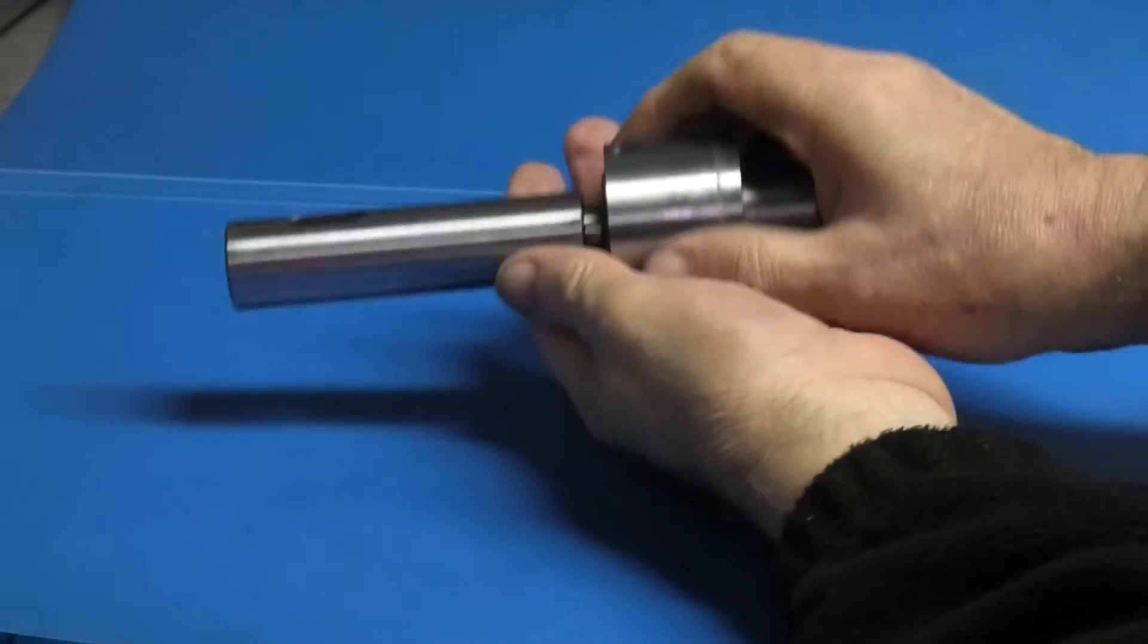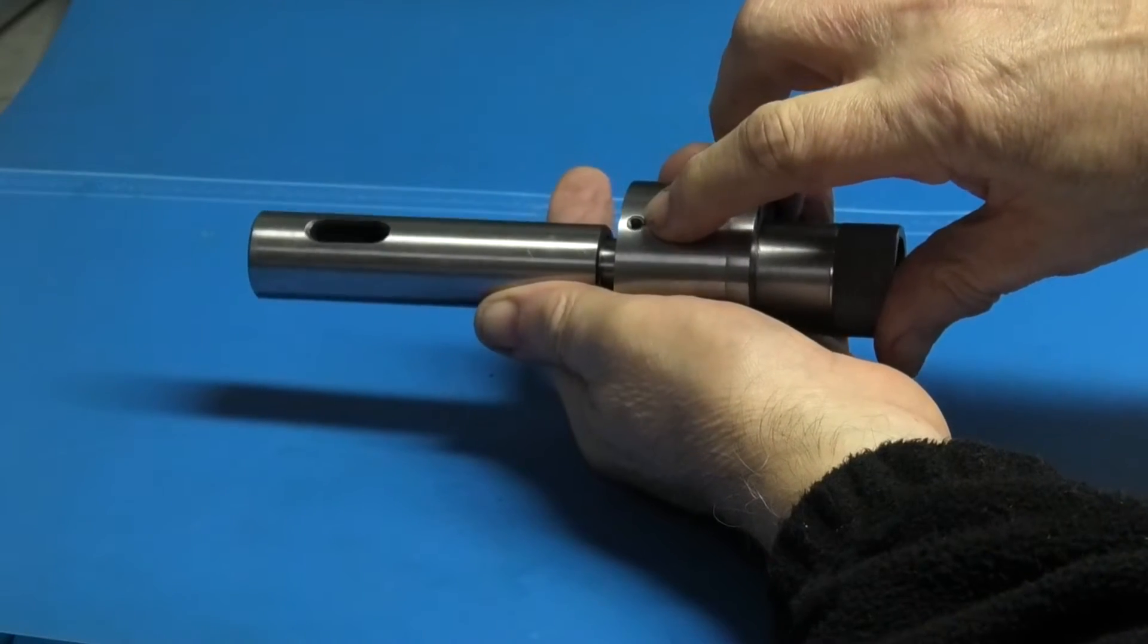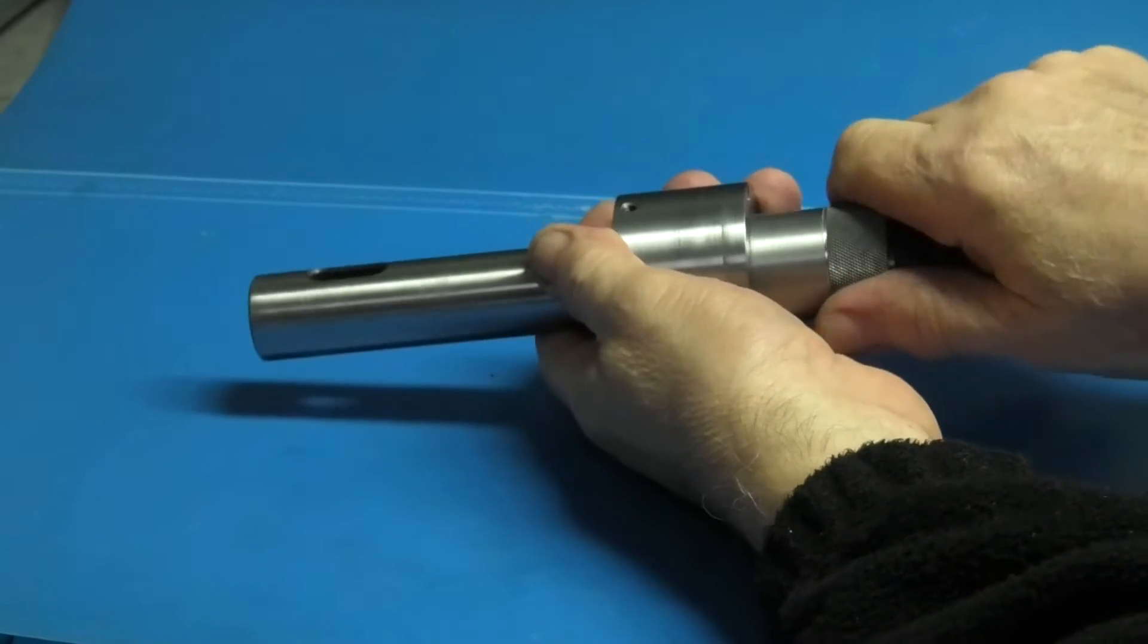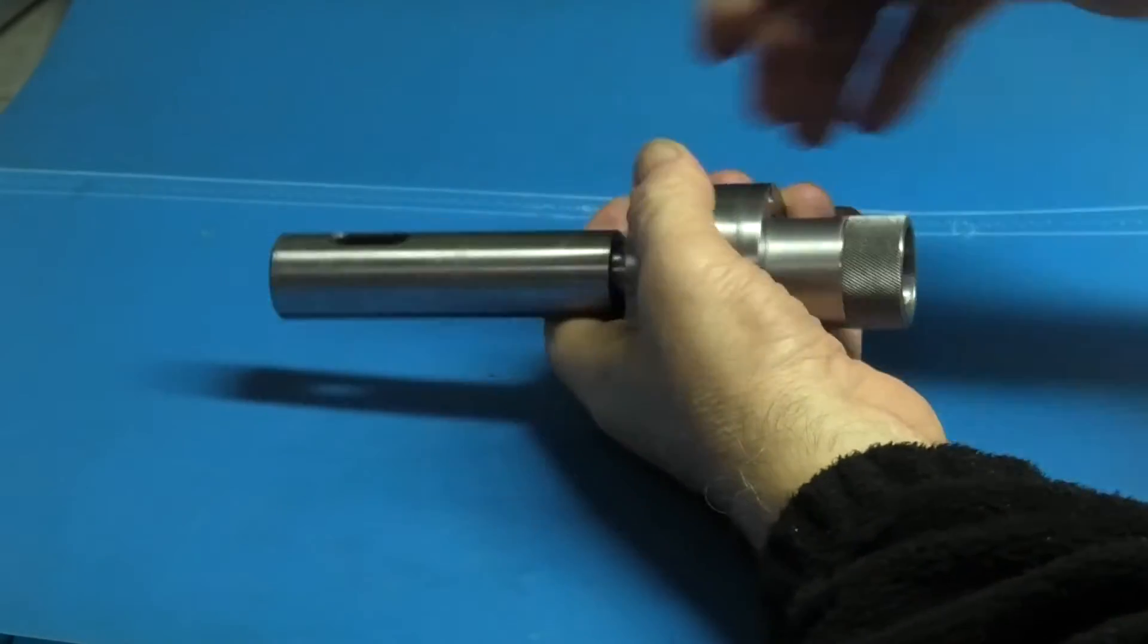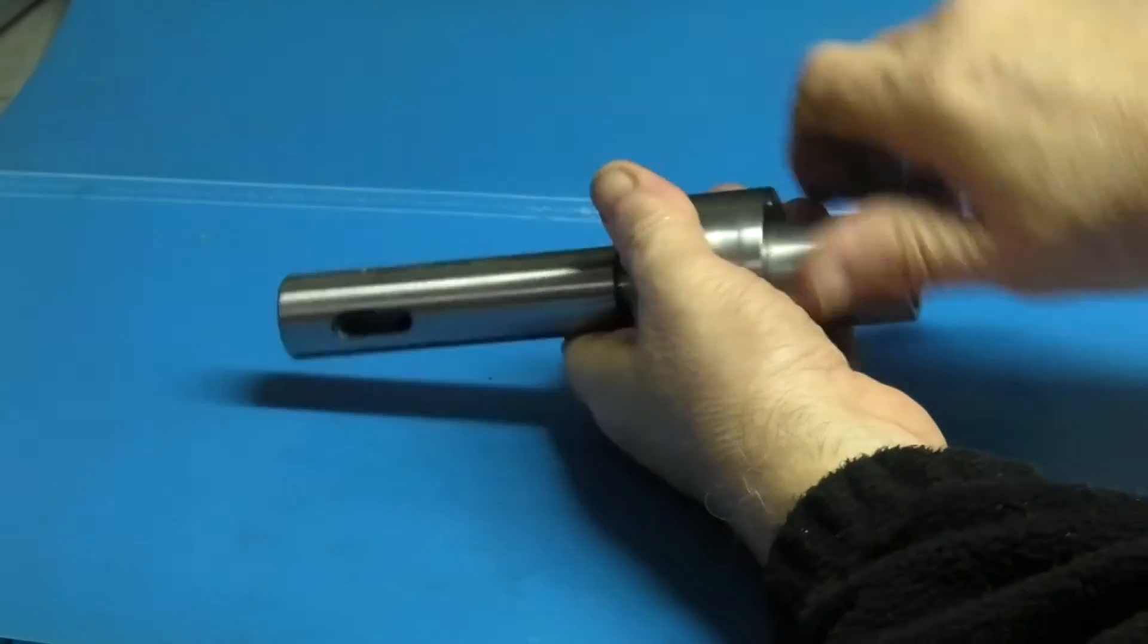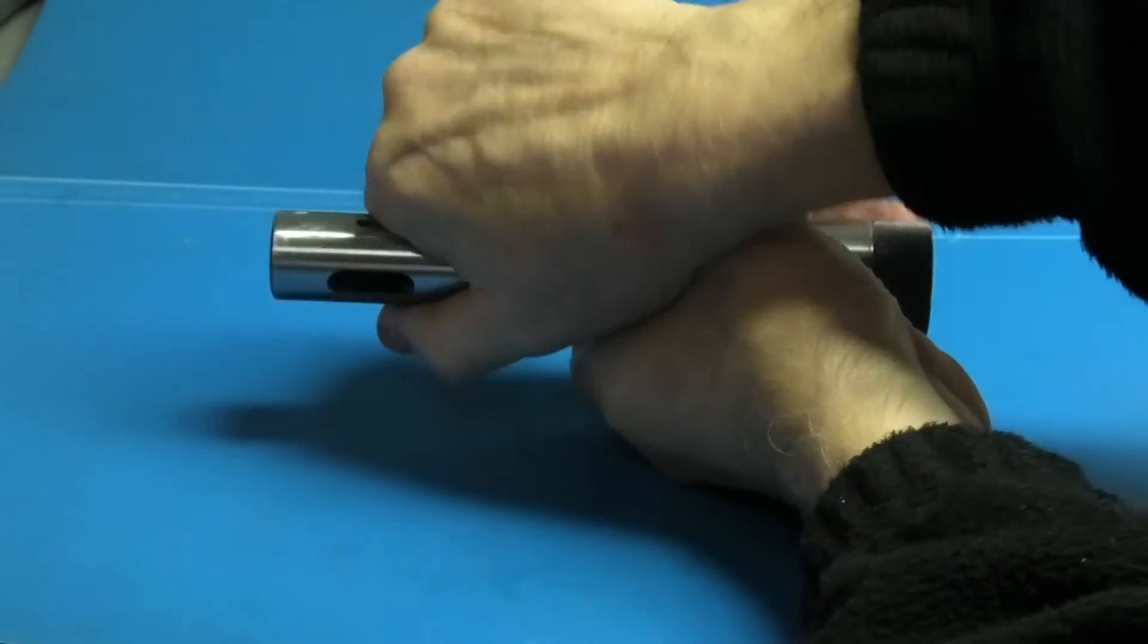So I've assembled it all except for the grub screw in there that locks it in position. This has got some play in there so it can move. So now tighten this up until it locks, which is there, and back it off half a turn.